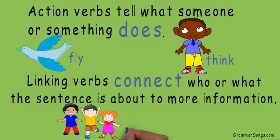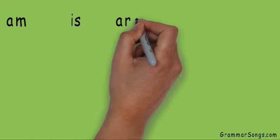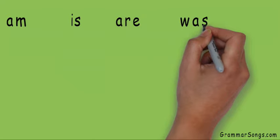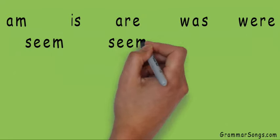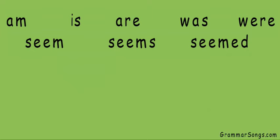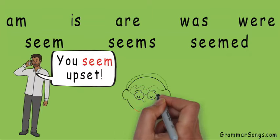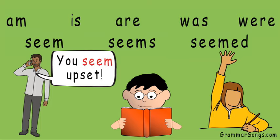The children are happy. You have also learned that am, is, are, was, were, seem, seems, and seemed are some common linking verbs that you will encounter and use when you speak, read, or write.